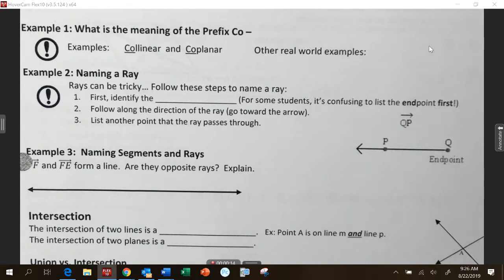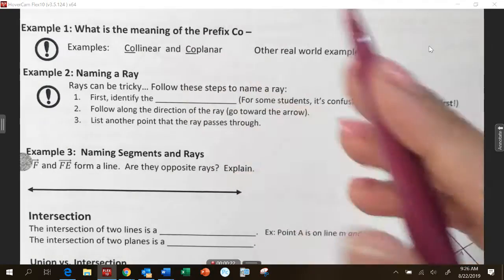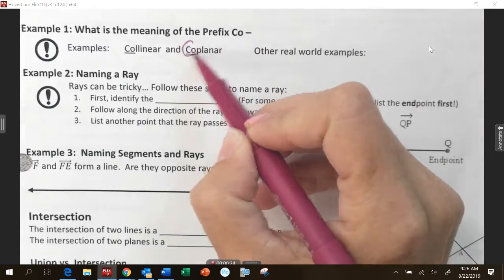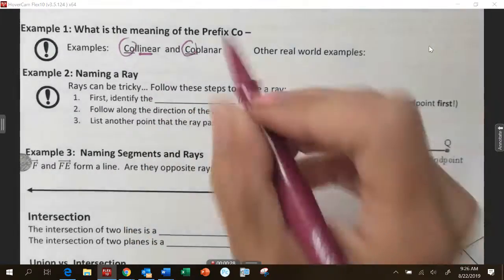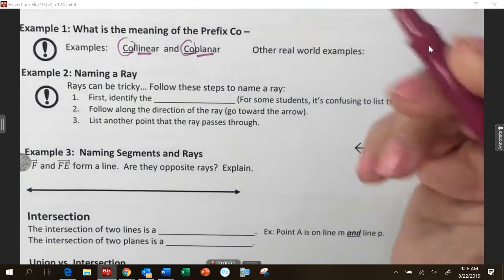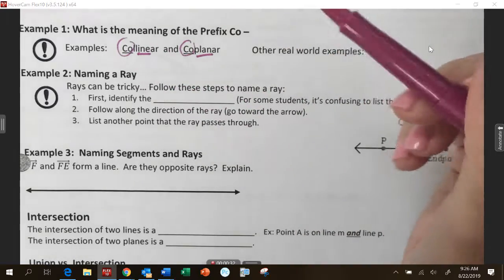Right, together. Or with. I actually forget what the, I looked it up on the internet and I forget exactly what it was. But yeah, it means that they go together. So if we have collinear or coplanar, that's like on the same line or on the same plane.